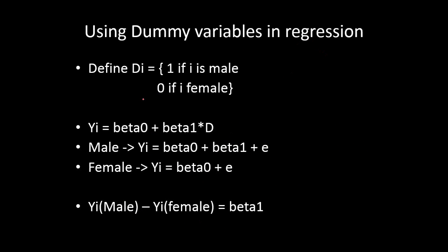How do we use it in the estimation? If we use male and female as text, it won't be recognized since it's character data. So we need to give it a numerical value — we do some sort of coding. We define a dummy variable, say d_i, which stands for the dummy for gender or any other categorical variable.